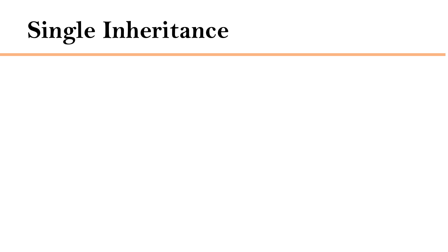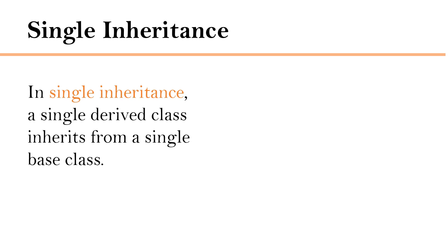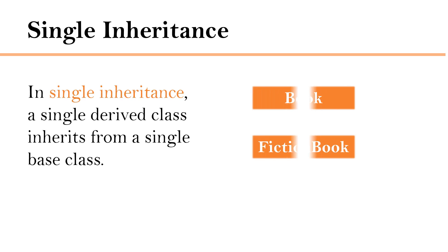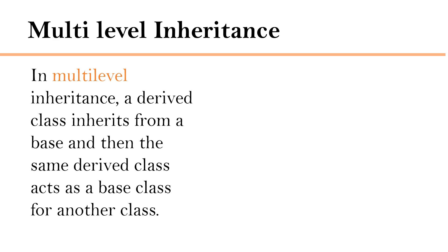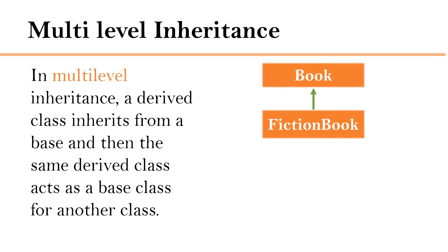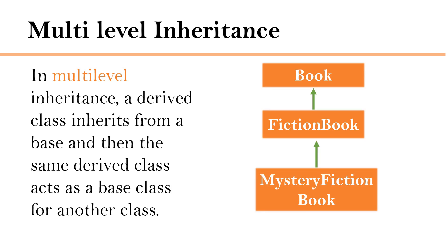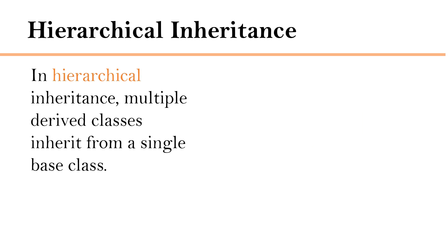Let's discuss the different types of inheritance. The simplest form is single inheritance, where a single derived class inherits from a single base class. In our example, FictionBook inherits from Book — this is single inheritance. Next is multi-level inheritance, where a derived class inherits from a base class and then that derived class acts as a base class for another class. For example, if we create a MysteryFictionBook class derived from FictionBook, then FictionBook becomes a base class for MysteryFictionBook — this forms multi-level inheritance.